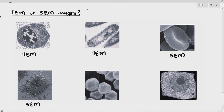The fifth one is a virus — you're able to see the surface, and that is taken using an SEM. The last one, the sixth one at the lower right corner, is a plant cell. You're able to see the internal structures of the plant cell, and that is taken using a TEM — a transmission electron microscope. I hope you are able to see the differences between images taken using the transmission electron microscope and scanning electron microscopes.